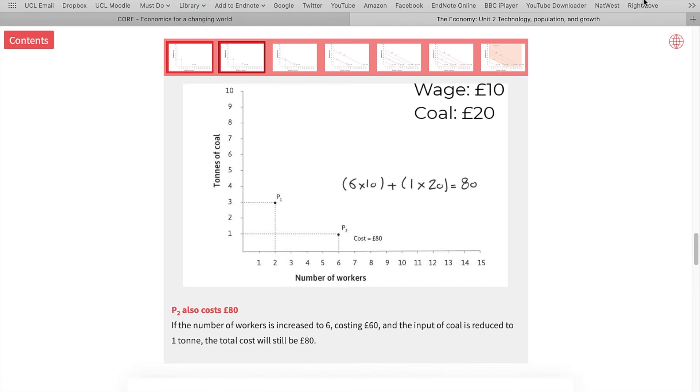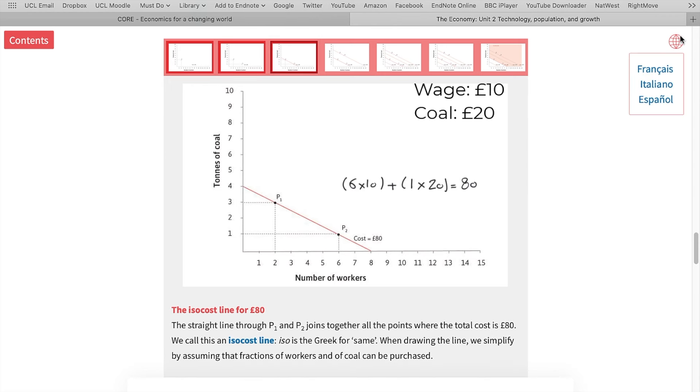Now that P1 and P2 cost the same, we can actually draw a line between them. I call this an isocost line. Whatever that exists on this line costs the same for our firm, and that is 80 pounds. So, our firm would be indifferent between choosing P2 or P1 or any other technology that may exist on this line.